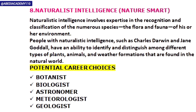The last type is naturalist intelligence — nature smart or environment smart. If you have this type, you have an expertise in recognizing or classifying different types of species, such as flora and fauna, and you are able to differentiate between different types of animal life and understand your own environment. Examples include Charles Darwin and Jane Goodall. They can identify and differentiate among different types of plants, animals, and weather formations. Career options include botanist, biologist, astronomer, meteorologist, or geologist.